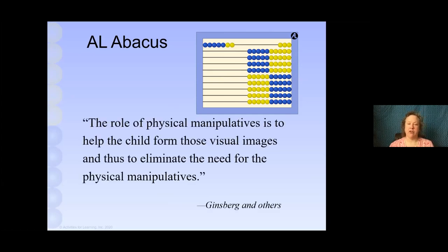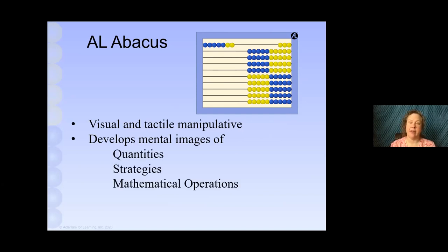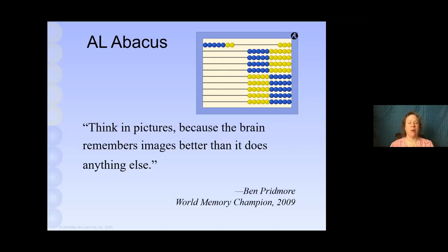Ginsburg and other researchers have said that the role of a physical manipulative is to help the child form visual images and thus eliminate the need for the physical manipulatives. The Abacus really stands out as a supreme manipulative given that definition. It is visual and tactile. It develops mental images of quantities, strategies, and mathematical operations. Ben Pridmore was the world memory champion of 2009, and he said, think in pictures because the brain remembers images better than it does anything else. And we all know that to be true. Otherwise, the advertising industry would not work as well as it does.